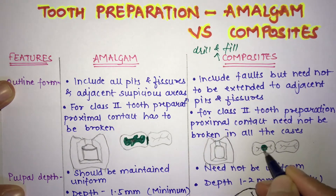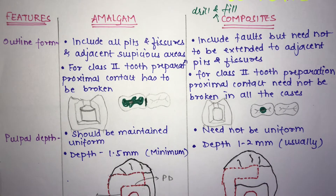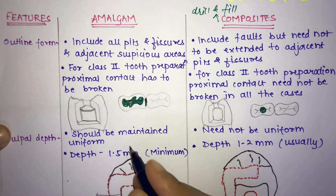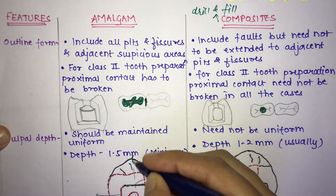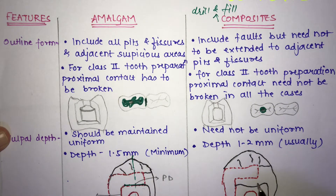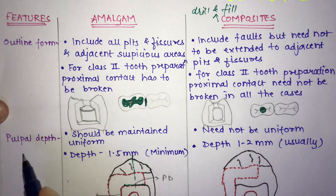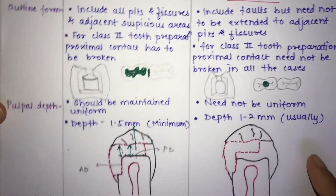The next difference is in pulpal depth. The pulpal wall is perpendicular to the long axis of the tooth. In amalgam, this pulpal wall must be completely uniform, whereas in composite it can be non-uniform — you just remove the caries and fill it. For amalgam, the pulpal depth is a minimum of 1.5 mm.